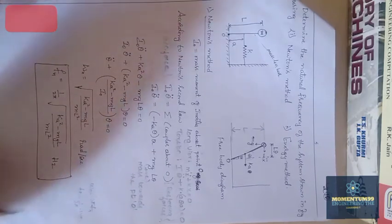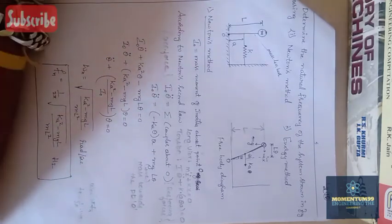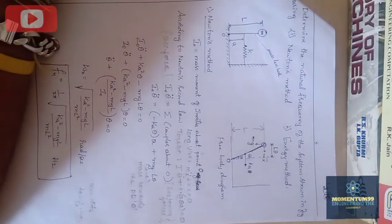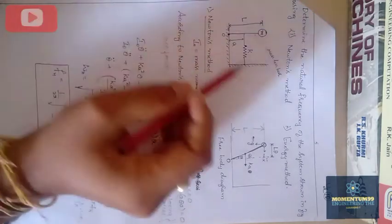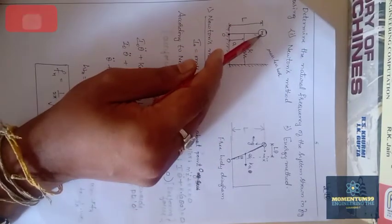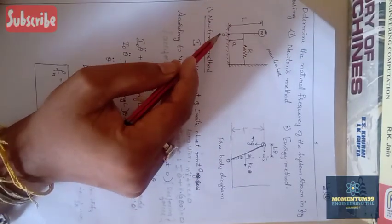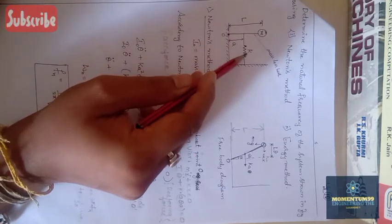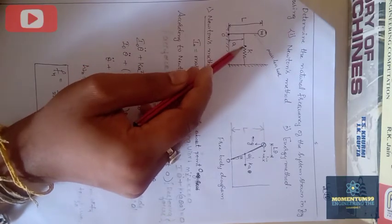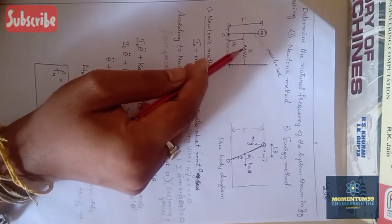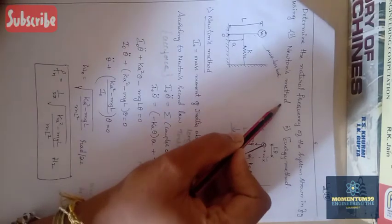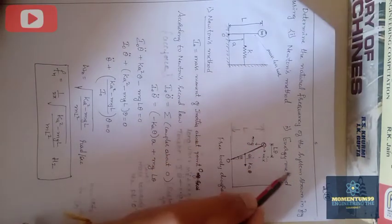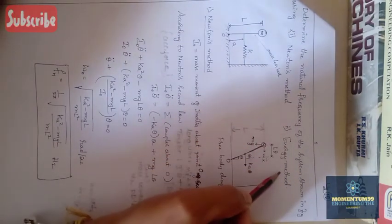Welcome back to Momentum 99. In this video we will be seeing a problem on how to find the natural frequency of a given system where a mass m is suspended from a point of suspension O, and there is also a spring. We need to find the natural frequency of this system using Newton's method and the energy method.